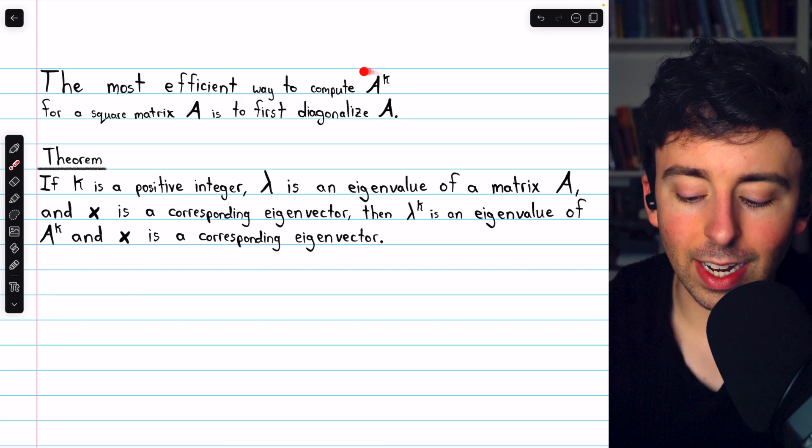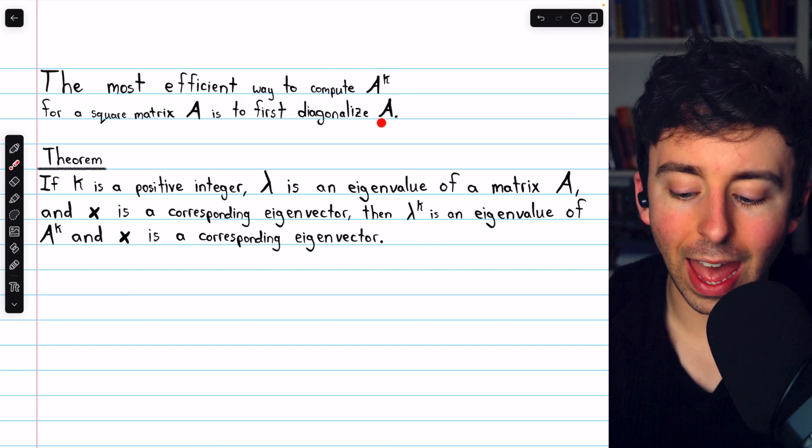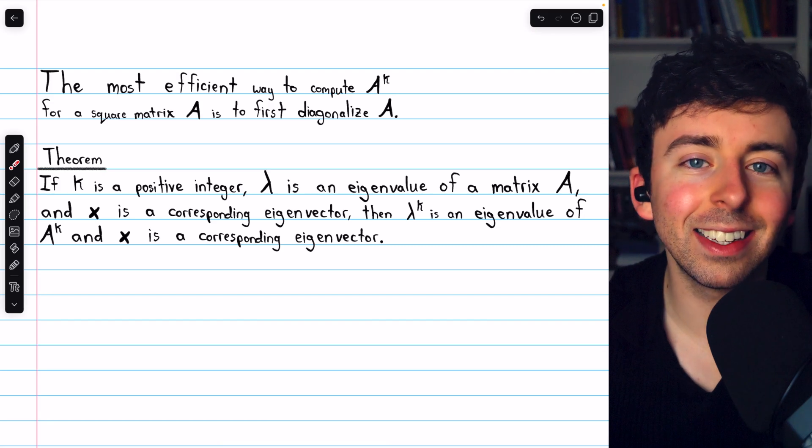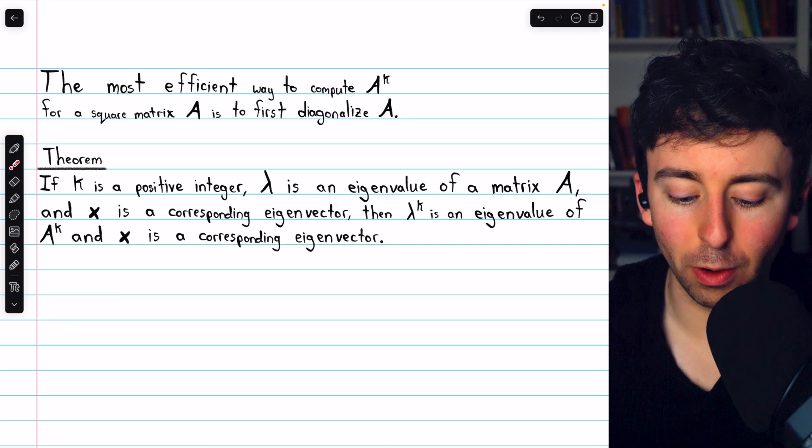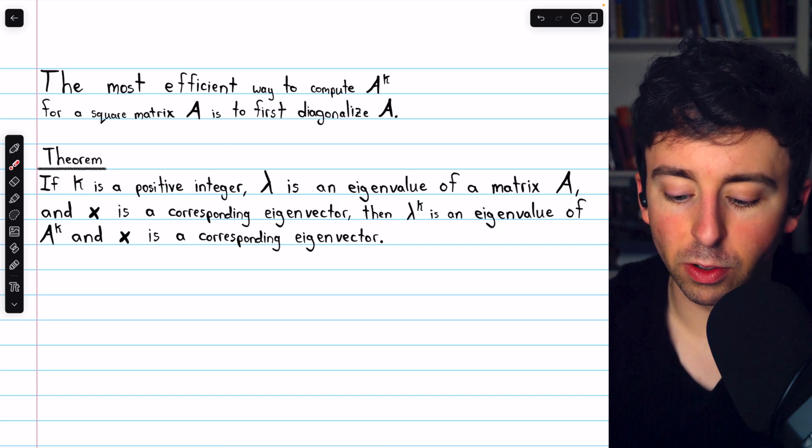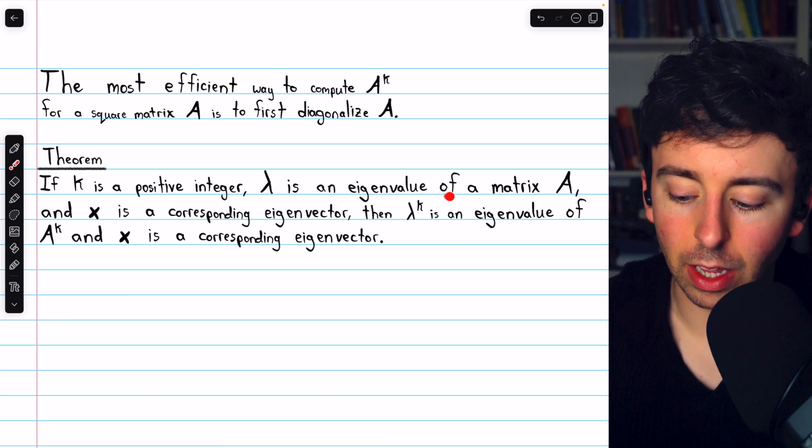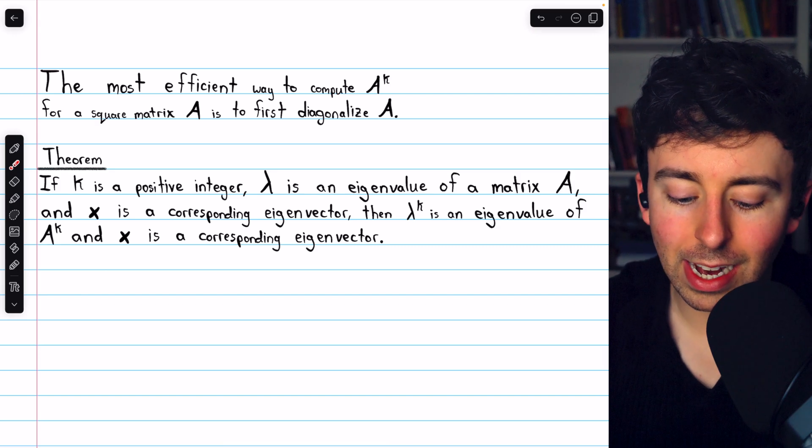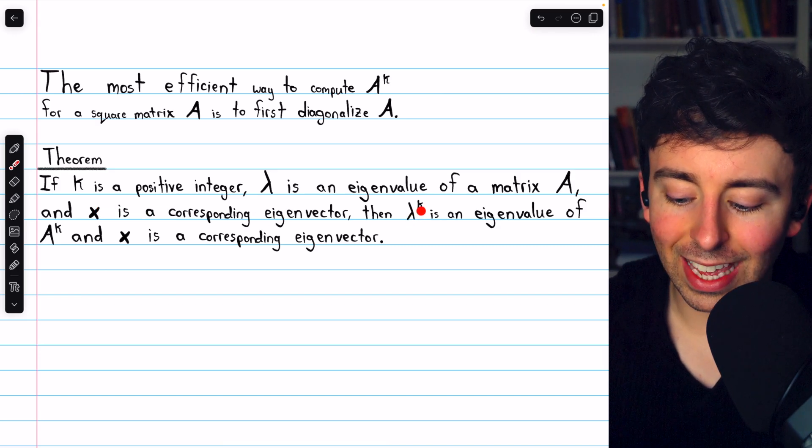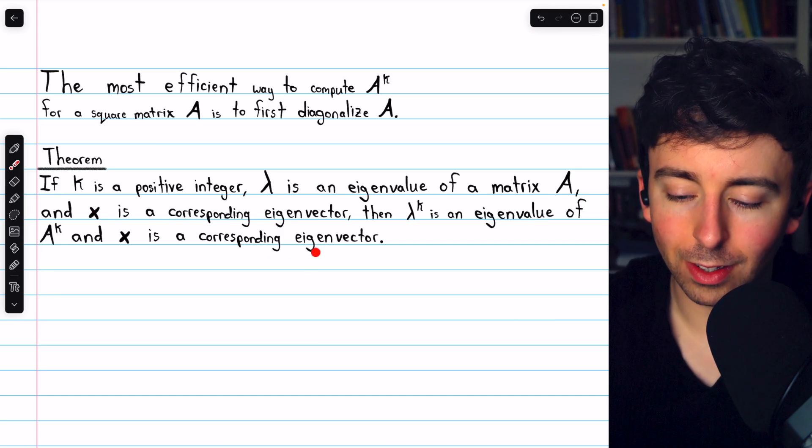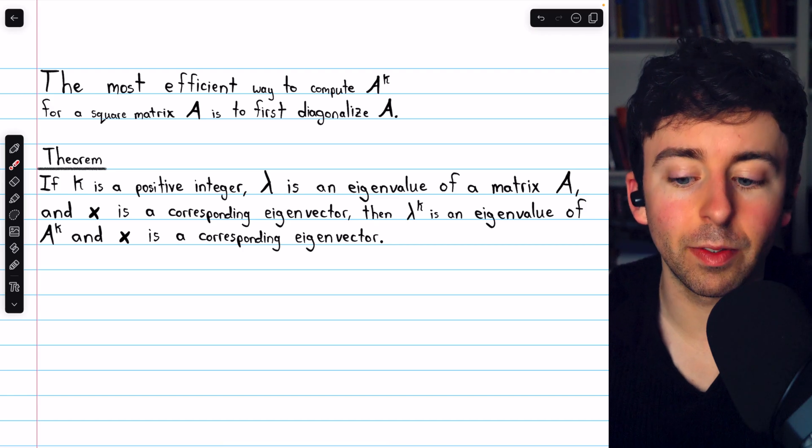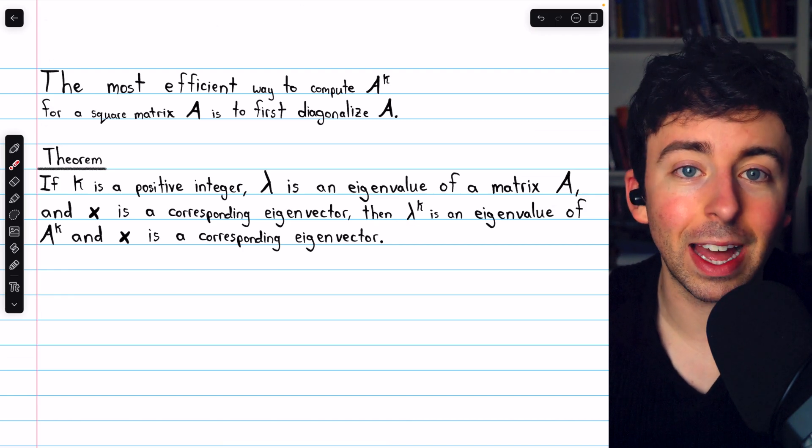In order to do this, connecting the diagonalized form of A with its power A to the k, we first need to connect their eigenvalues, which we do with this theorem. If k is a positive integer, and lambda is an eigenvalue of a matrix A, and x is a corresponding eigenvector, then lambda to the k is an eigenvalue of A to the k, and that same eigenvector is still a corresponding eigenvector for that new eigenvalue.